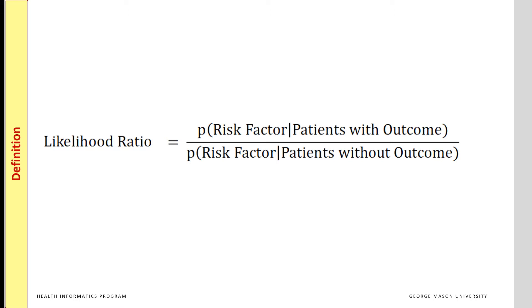The prevalence of the risk factor is examined in two different subpopulations: on top, the group that has the outcome, and on the bottom, the group that does not have it.